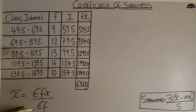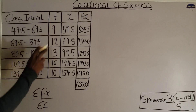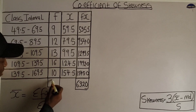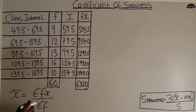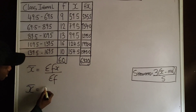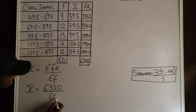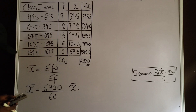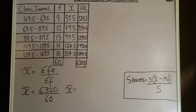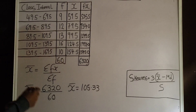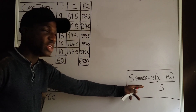I still need to sum the frequency column. From the formula, mean equals summation fx over summation f. Adding 9, 12, 13, 16, and 10 together gives summation f equals 60. So the mean value is 6320 divided by 60, which equals 105.33.